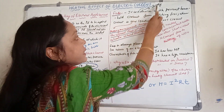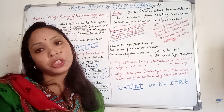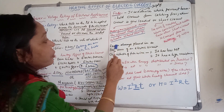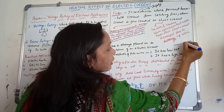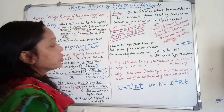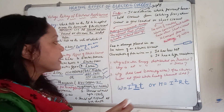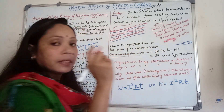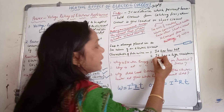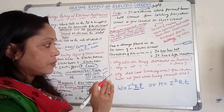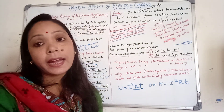So fuse is a safety device which prevents household circuit from catching fire when the circuit is overloaded or short-circuited. Fuse is always placed in the live wire of an electric circuit. Characteristics of fuse wire: first, the fuse wire always has a low melting point. Second, it should have high resistance. These are the two basic characteristics of fuse wire.